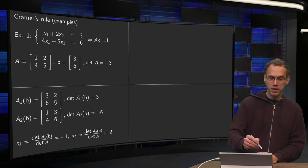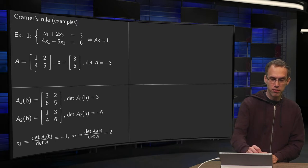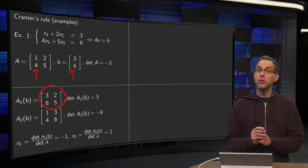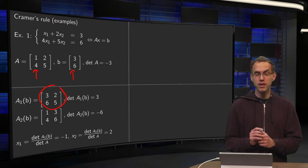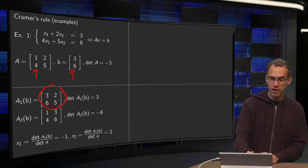First you form A1(b). So what do you do? You take the first column 1, 4, and you replace it by 3, 6. So that's what you get over here. Then you compute the determinant of A1(b). 3 times 5 minus 2 times 6 equals 3.